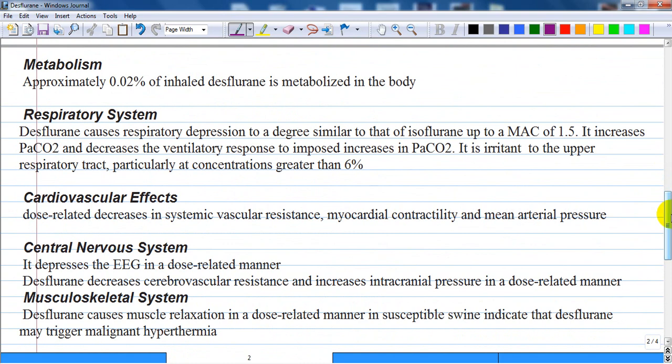How about metabolism? There is very little defluorination of desflurane. After prolonged anesthesia, there is only a very small increase in serum and urine trifluoroacetic acid concentrations. Approximately 0.02% of inhaled desflurane is metabolized in the body and excreted through the urine. It is not significant at all.